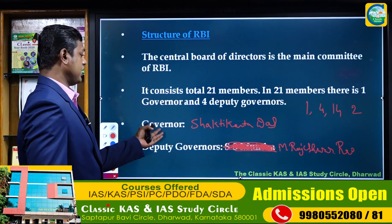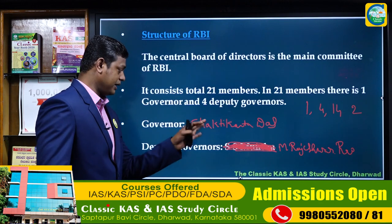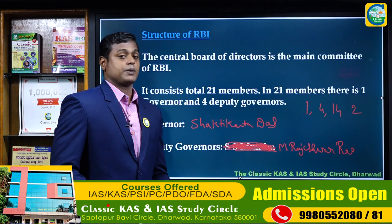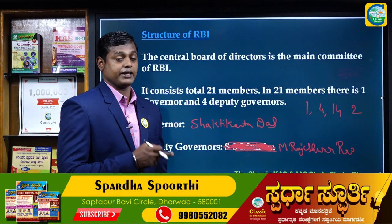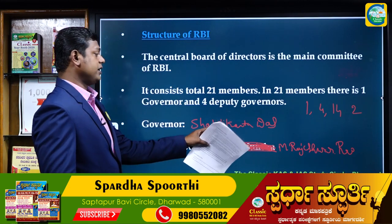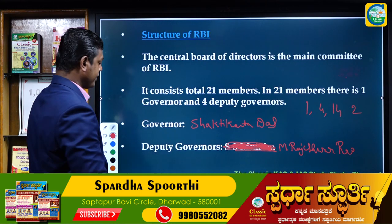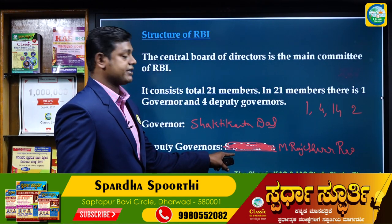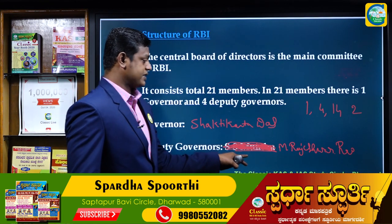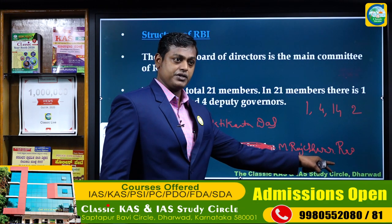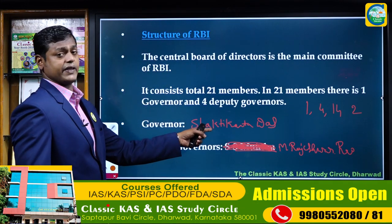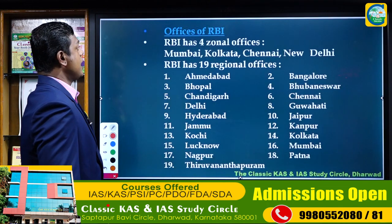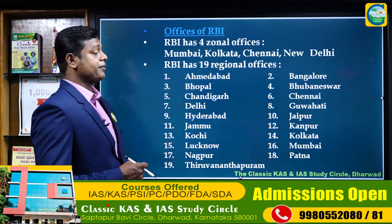The present Governor of RBI is Shaktikanta Das. The previous governor was Urjit Patel. There are four deputy governors currently. This covers the structure of RBI. Next, we look at the offices of RBI.